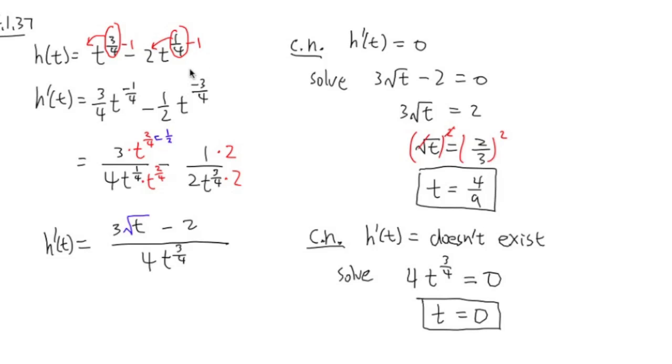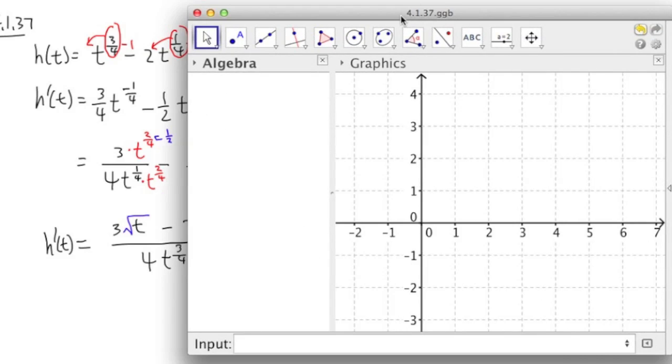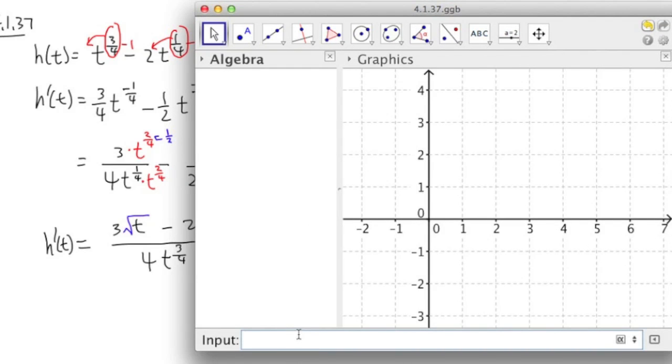I would also like to show you how does the graph of the original function look like. So I will use my favorite software, GeoGebra. So in this software, I have to enter this function as y is equal to x to some power. So I'll do it right here. y is equal to x raised to the parentheses 3 over 4 power minus 2 x raised to the parentheses 1 over 4 power. Enter.